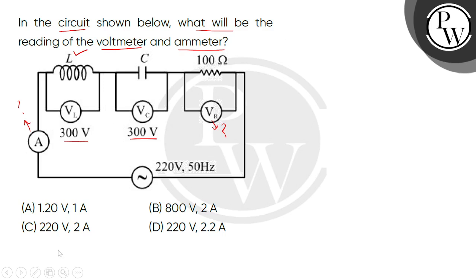We can see that the voltage across the inductor is 300 volts and the voltage across the capacitor is 300 volts.